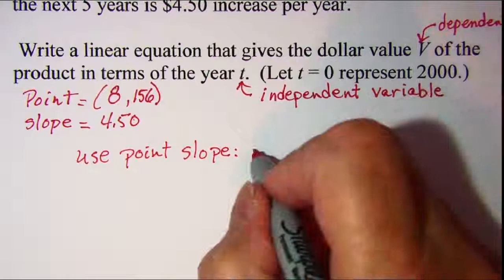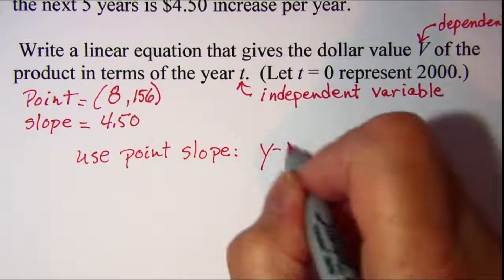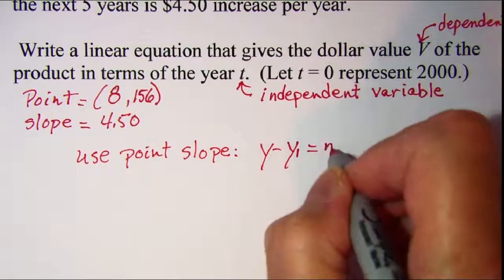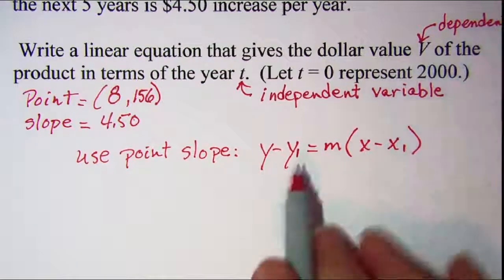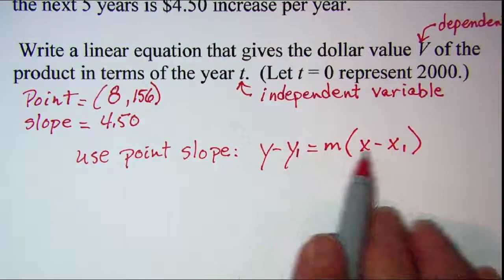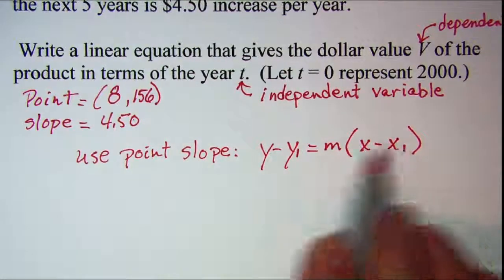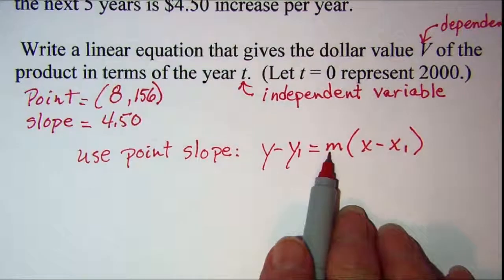And that is y minus y1 equals m times x minus x1, where x1 and y1 are the coordinates of the point and m is the slope.